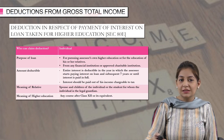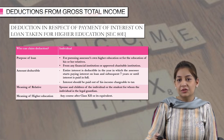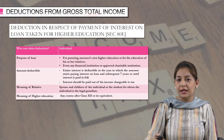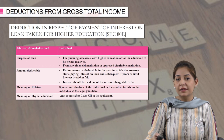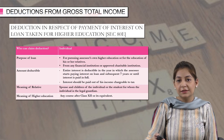Now let us discuss how much amount of interest is deductible. The entire interest is deductible in the year in which the assessee starts paying the interest on loan and for subsequent 7 years. So in total there are 8 assessment years where you can claim the deduction of the interest until the interest is paid in full. The deduction is available for the interest paid.